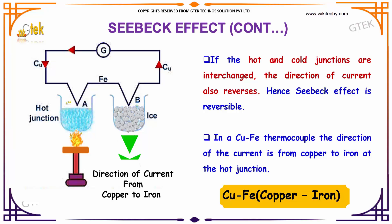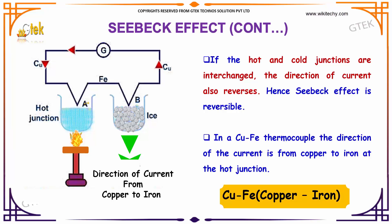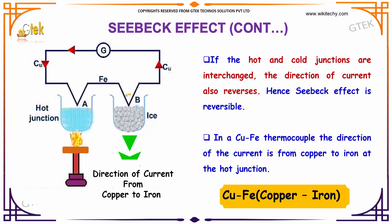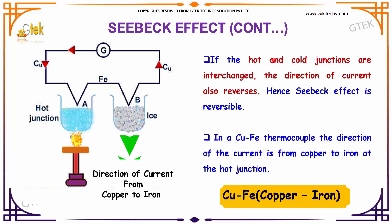There is an implementation for the Seebeck effect. You can see there is a hot junction and a cold junction. However, if the hot and cold junctions are interchanged, the direction of current will be reversed — so the Seebeck effect is reversible. In a copper and iron thermocouple, the direction of current is from copper to iron at the hot junction.